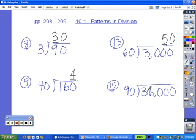Number 15, 90 can't go into 3 or 36, but it can go into 360. 9 into 36 is 4, so 90 into 360 would be 4. We have 2 extra 0s on the end to bring up.